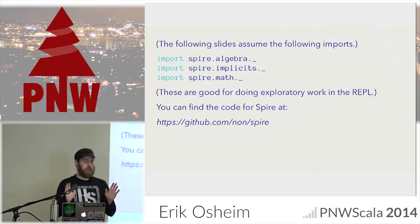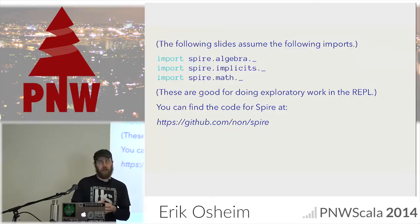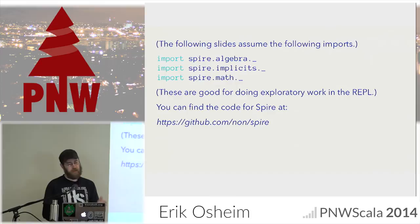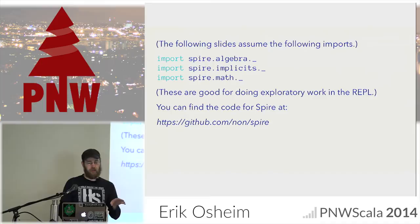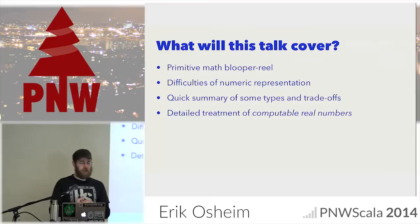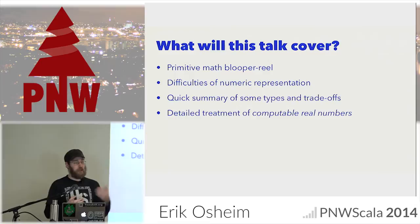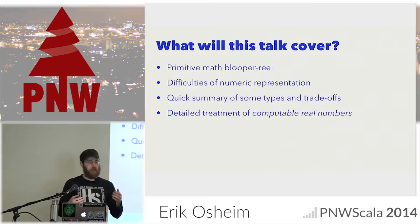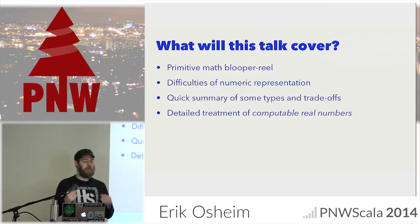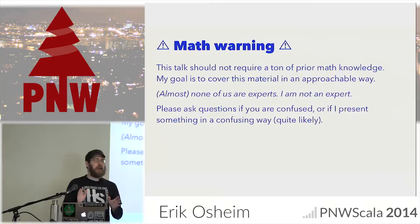Just a quick preamble: I tried to make as many of the slides as possible runnable, but they all assume a series of imports that give us a whole bunch of types to work with and some nice implicits. There are four phases — the first three will be fast and the fourth a bit longer. There's going to be a primitive math blooper reel, then an explanation of why the bloopers occur, a tour of interesting number types Spire supports, and then we'll hit real numbers, which are hard.